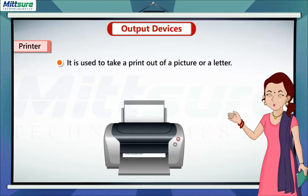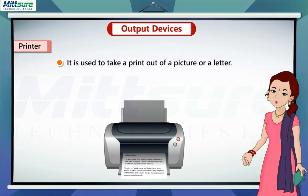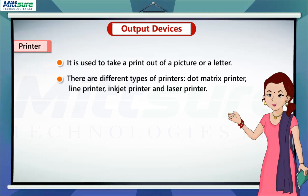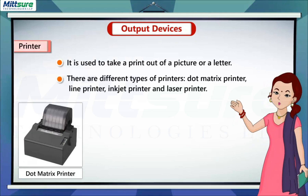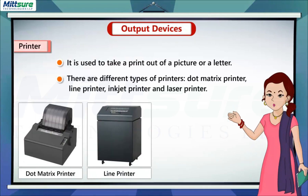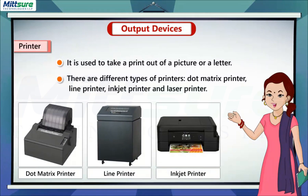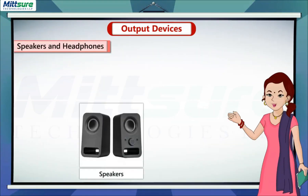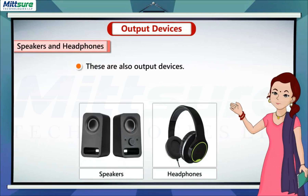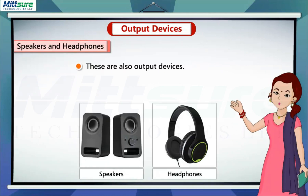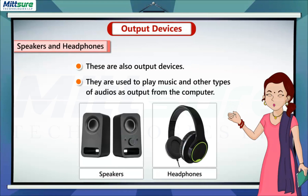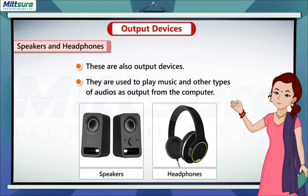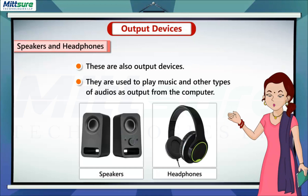Printer: it is used to take a printout of a picture or a letter. There are different types of printers: dot matrix printer, line printer, inkjet printer, and laser printer. Speakers and headphones: these are also output devices. They are used to play music and other types of audio as output from the computer.